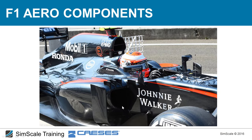A turning vane is also important for smoothing the turbulent air from the front tire and channeling it to the side. Looking in more detail at this region — these small elements are vortex generators. The side pod is the housing for the engine and gearbox, and its curvature can create a suction effect and generate lift force.